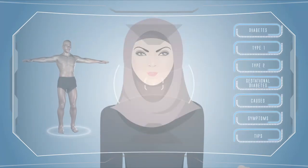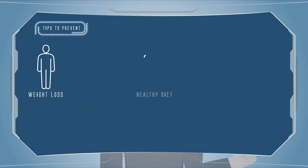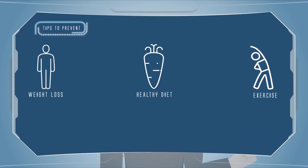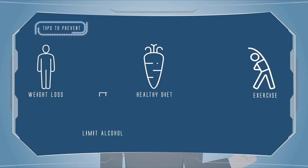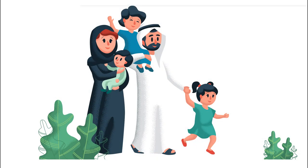Here are some tips to help reduce the risk of Type 2 diabetes: lose extra weight, eat a balanced and healthy diet, get more physical activity, limit alcohol intake, and quit smoking. Hope this video helps you lead a healthy life. Thank you for watching.